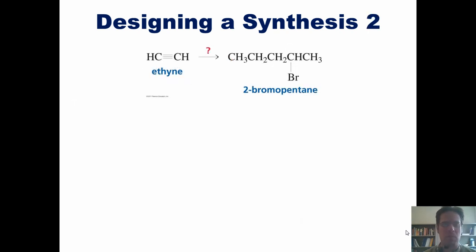Here's another synthetic problem for you to consider. How in the world could I convert this molecule, ethyne, which is also known commonly as acetylene, the same molecule found in acetylene gas torches, into this product, 2-bromopentane?